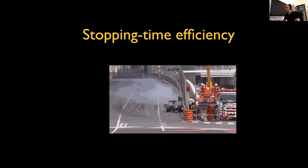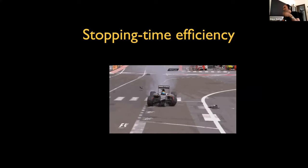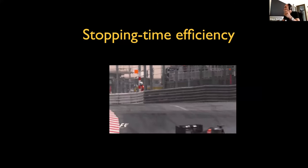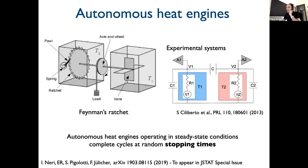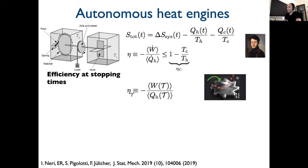Here is an illustration of stopping-time efficiency: you look at a car until it stops and ask what is its efficiency. The car takes heat from the fuel and does work. I'm thinking about autonomous heat engines like the Feynman ratchet, where there are two heat baths — or for example experimental systems with two resistors at different temperatures. You take the theory I explained and apply it to non-isothermal systems, where the total entropy is the system entropy plus the heat fluxes to each of the baths divided by their temperatures.